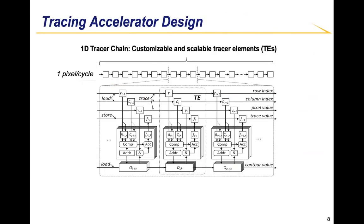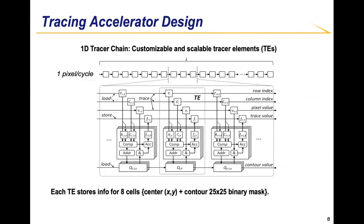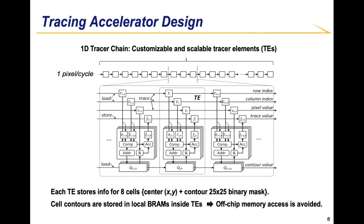This figure details the Tracing Accelerator design. It is a 1D cellular array composed of customizable and scalable tracing elements. It takes one input pixel at each clock cycle. Each tracing element preloads tracing information for eight different cells. For each cell, we keep the cell center and a 25 by 25 binary cell contour for the trace extraction. These cell contours are stored in local BRAMs inside the tracing elements. In this way, the design avoids off-chip memory access during the tracing process.